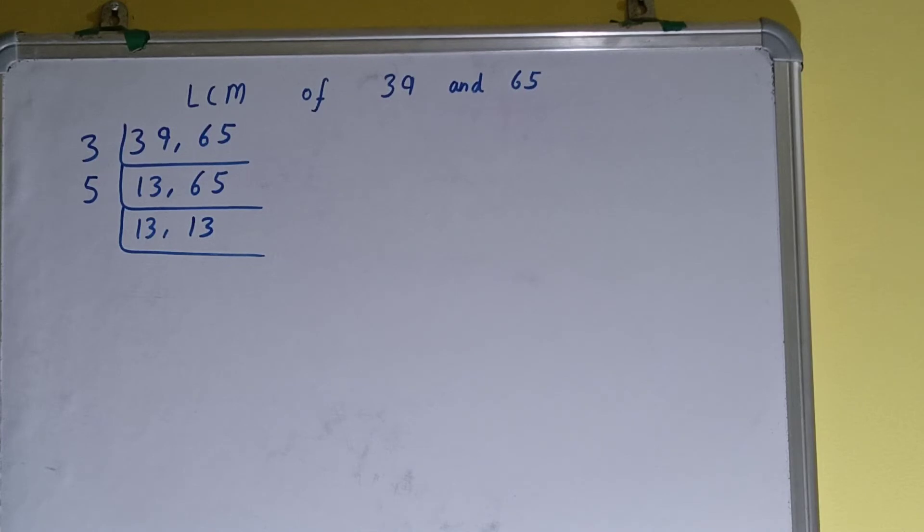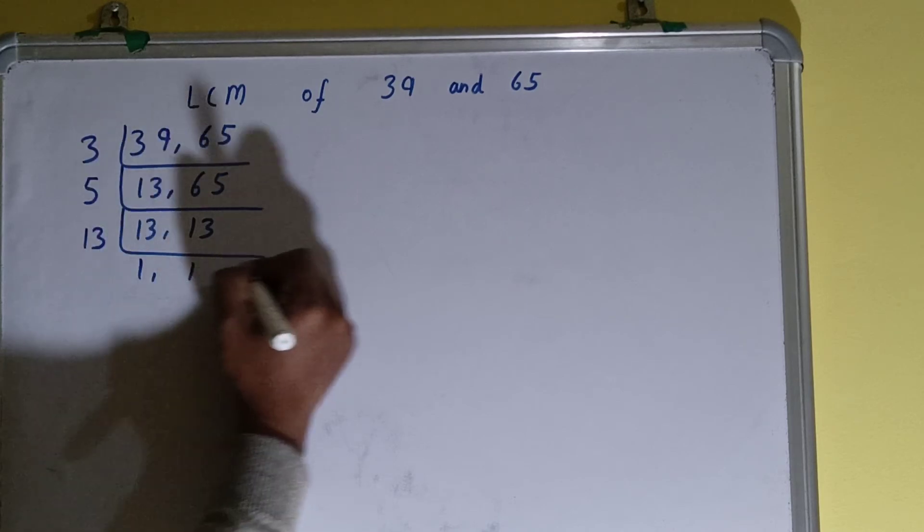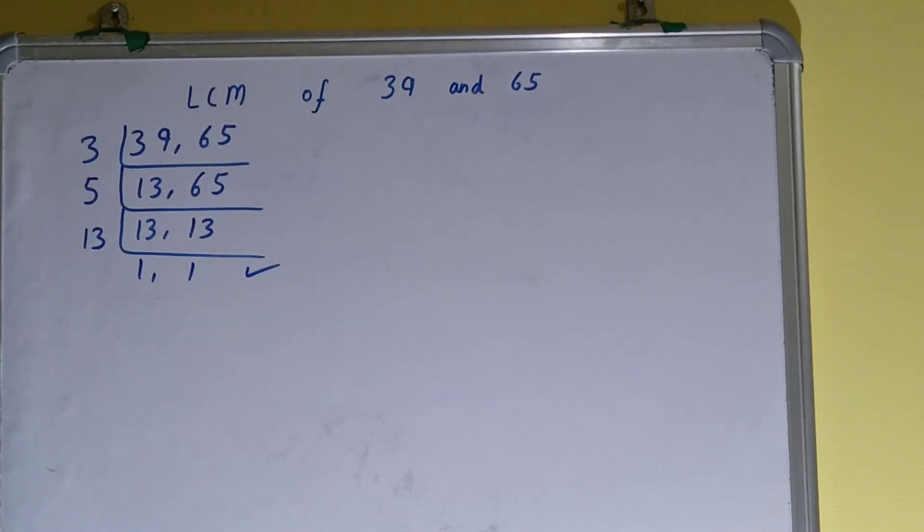Again we'll check if any of the numbers is divisible by 5. None of the numbers, and if you see the number 13, it is a prime number, that means it can be divided by itself only. So we'll divide it by itself and we'll get 1 comma 1. Once we get that, we need to stop.